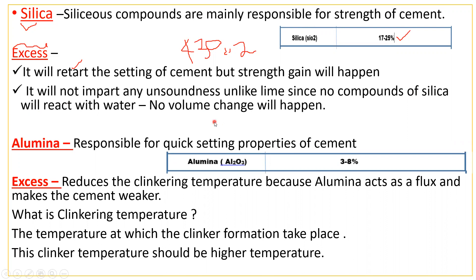Coming to the third point — alumina. Alumina compounds are responsible for the quick setting properties of cement. The alumina content should be in between 3 to 8 percent.